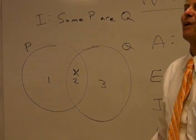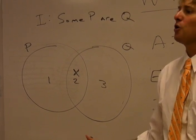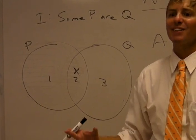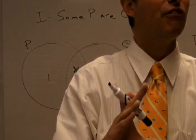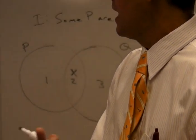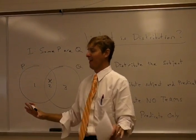Now you'll notice that we're not talking about all philosophy professors. We're also not talking about all bow tie wearers. So we're not talking about the entirety of either class of things. This is why I statements distribute neither subject nor predicate.